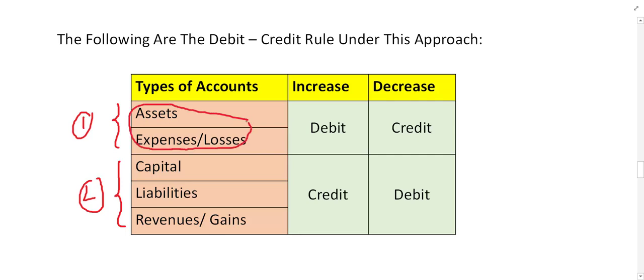Group 1 consists of asset, loss, and expenses. For this group, if it increases, we call it debit; if it decreases, we call it credit. For example, if you have four computers in your business and you go to the market and purchase one more, the number of computers increases. Since a computer is an asset and it increased, the computer account becomes debit.